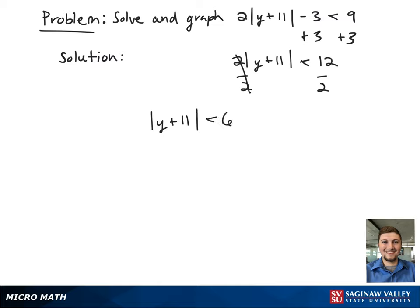This gives the absolute value of y plus 11 is less than 6. Now that we have the absolute value term by itself, we can rewrite it as negative 6 is less than y plus 11 is less than positive 6.